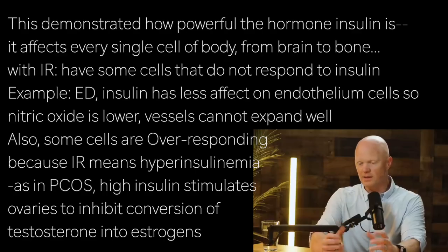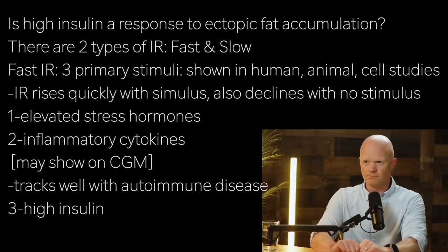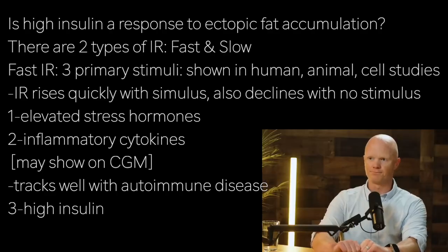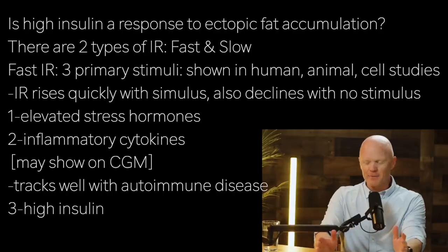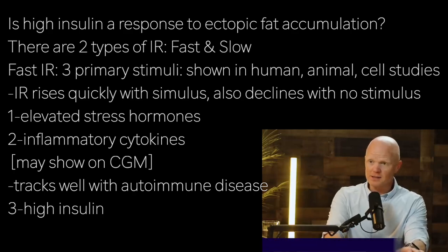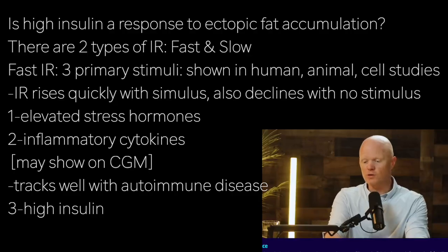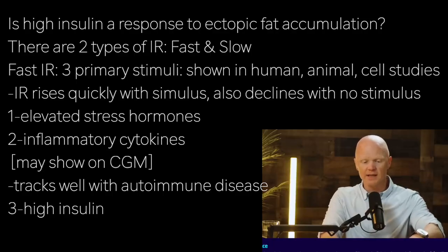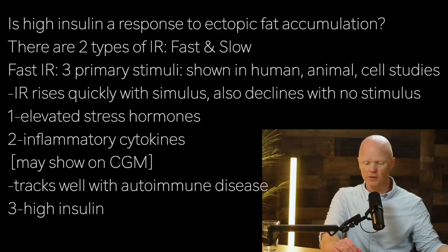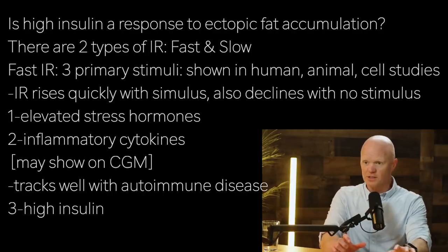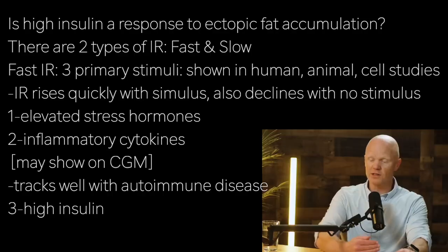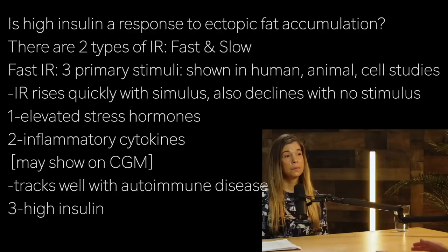Some researchers think that high insulin is more of a response to ectopic fat accumulation, with obesity being the underlying cause of the high insulin. I look at the origins of insulin resistance as being one of two: what I call fast insulin resistance and slow insulin resistance. Within the fast insulin resistance side, there are three primary stimuli that have been confirmed in humans, rodents, and isolated cell cultures that can cause insulin resistance quickly — like within hours. But at the same time, if the stimulus is removed, the insulin resistance is resolved in short order.